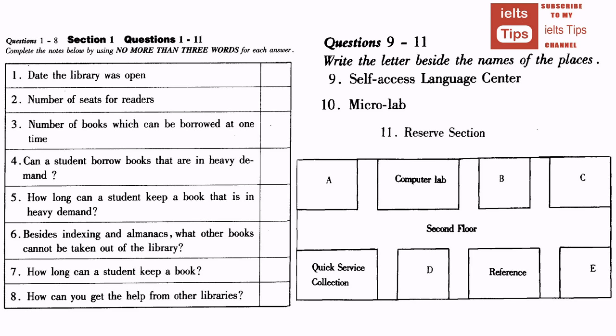We have the Self-Access Language Centre. It's on the second floor, directly opposite the reference section of the library, next to the micro-lab. In the Self-Access Centre, the library also provides access to information stored in computer data banks in Europe and the United States. Other materials which are kept by the library, and which you will be able to consult, are copies of theses and dissertations completed by Bradford students, past examination papers, newspapers, and pamphlets. All these are in our reserve section, opposite the computer room, on the second floor as well.